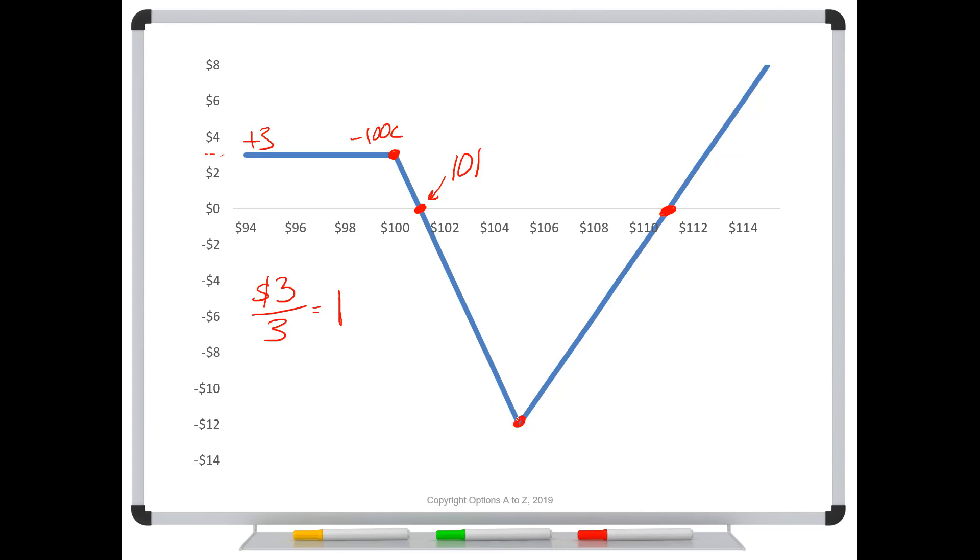What's this number down here? Well, I have a $5 difference in strikes. I'm short the $100 call. I'm long the 105, but that's on three contracts. So that's 15 points of a potential loss. But I started with a $3 credit. So my total loss down here should be 12. And look at where we're lining up over here, right at minus 12.